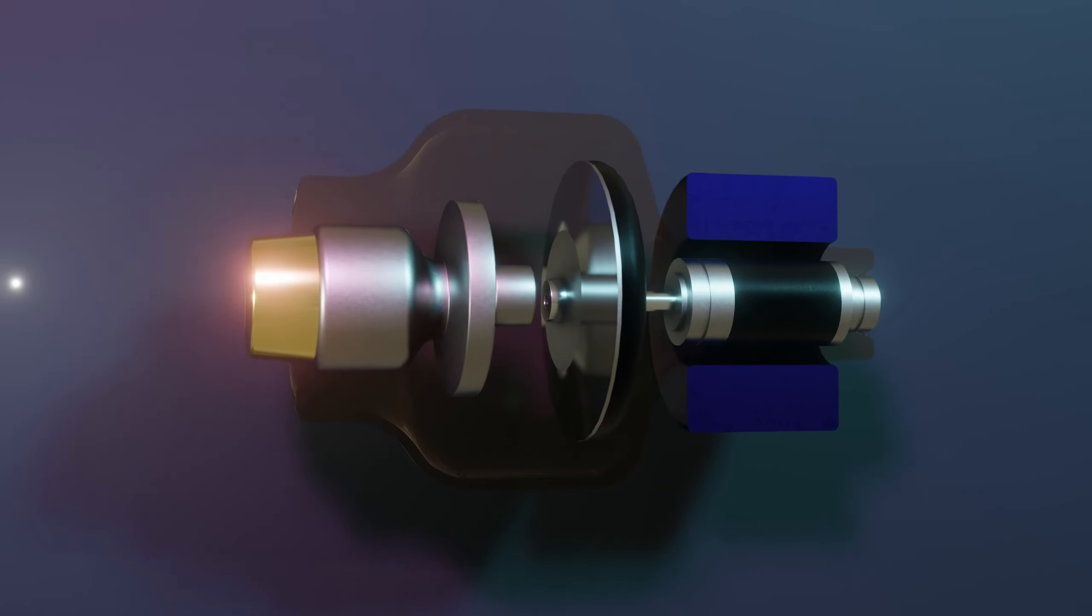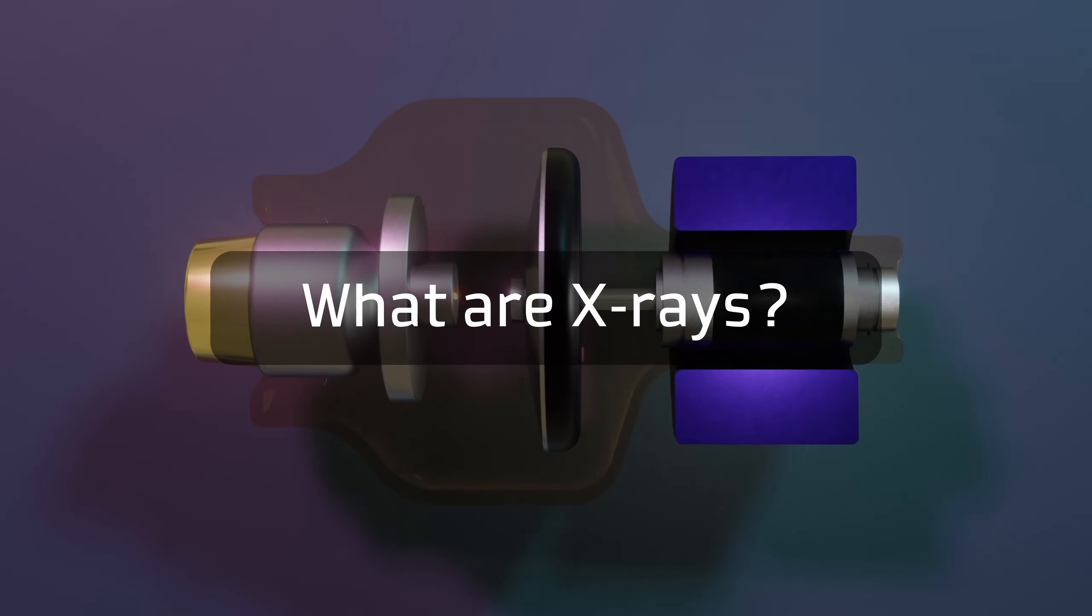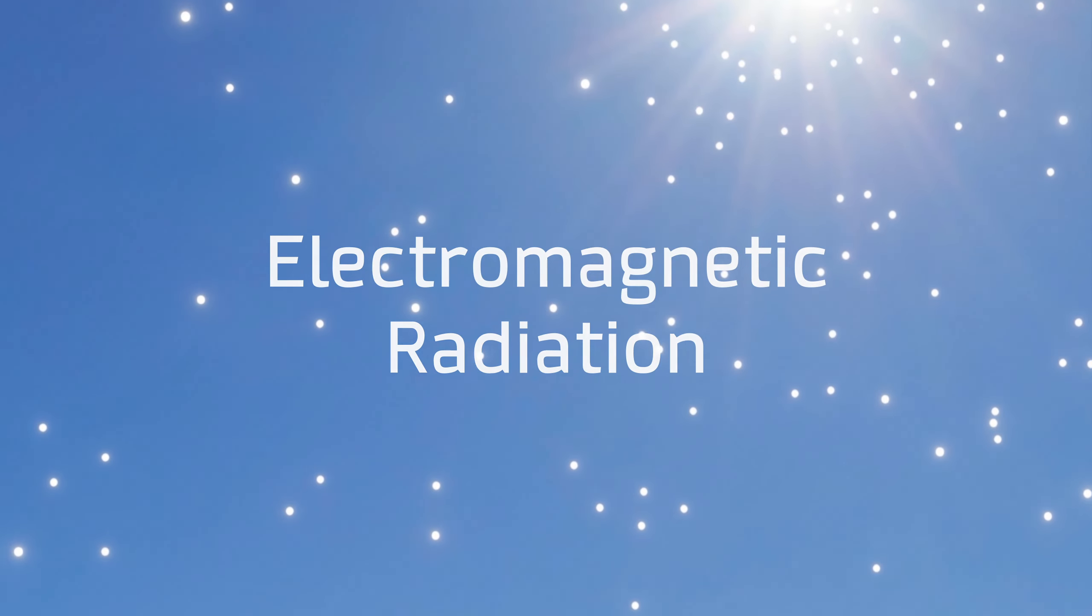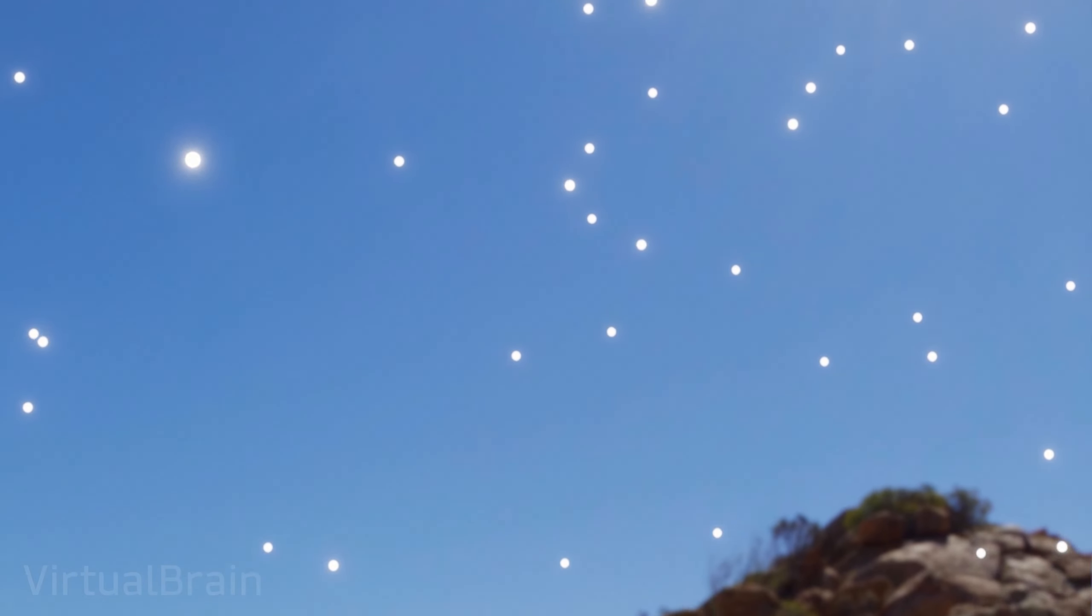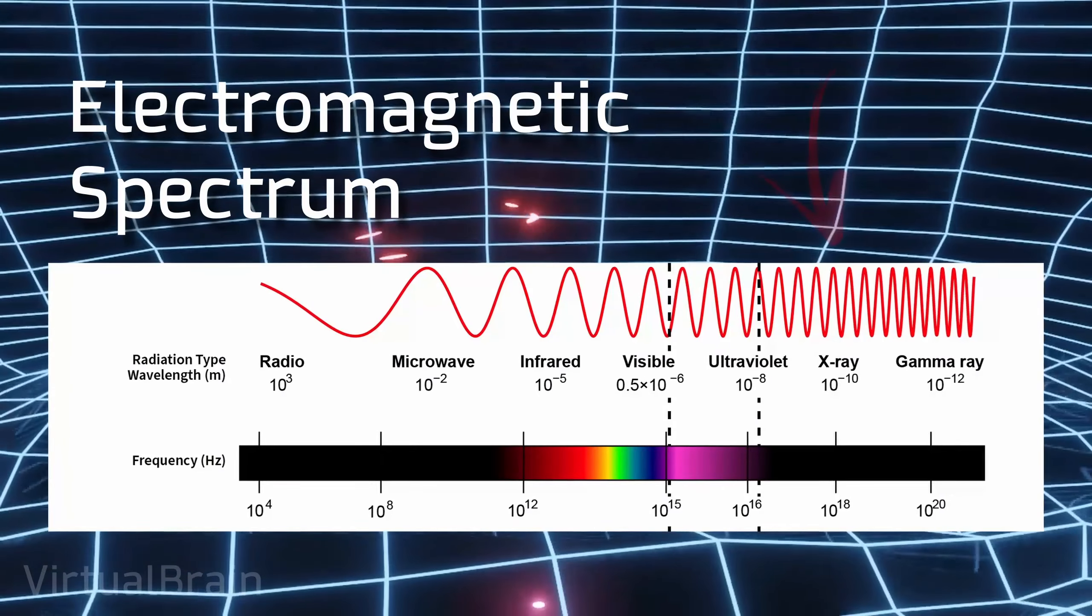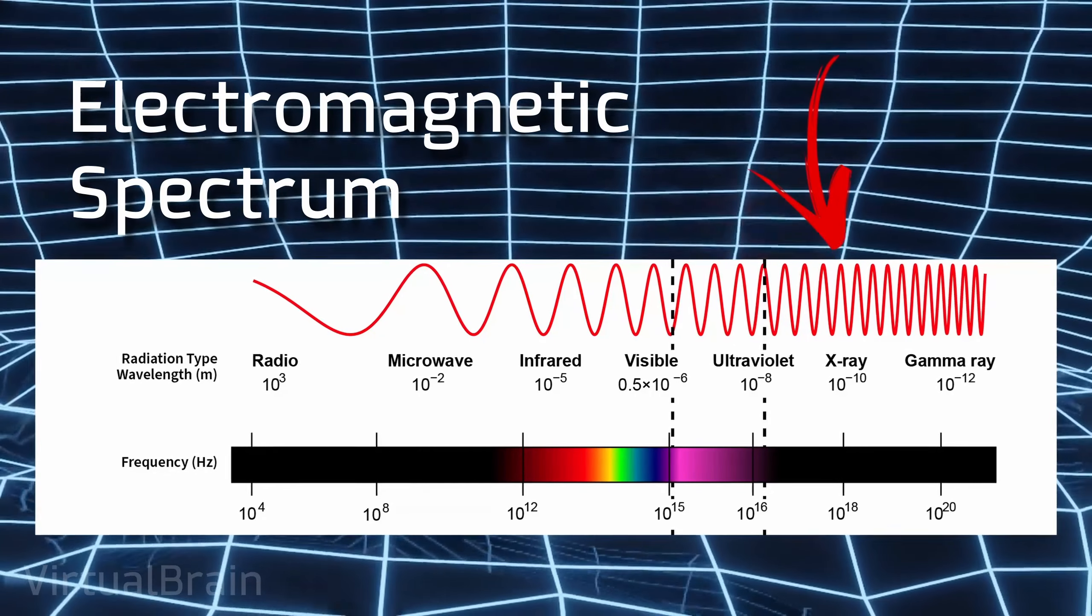To understand how an X-ray tube works, we first need to clarify what exactly X-rays are. They are a form of electromagnetic radiation, which means they are in the same category as light, radio waves, or even the Wi-Fi that reaches our phones. However, they have a much higher frequency and therefore higher energy, which gives them two important characteristics.